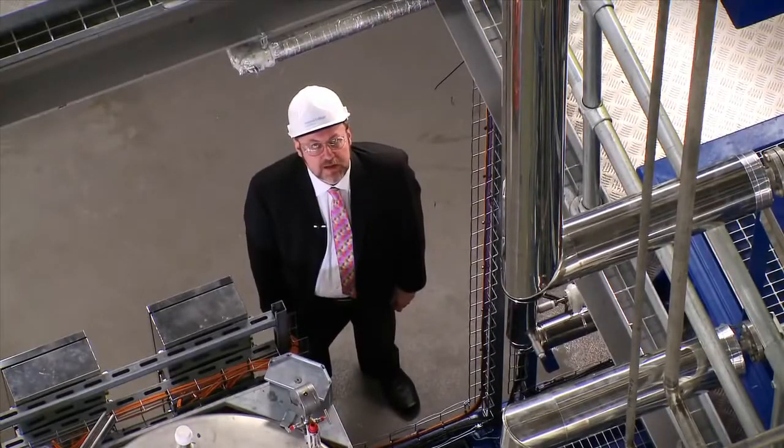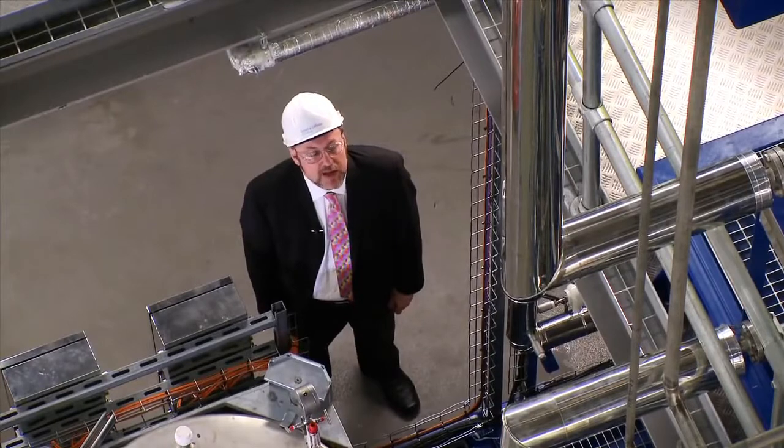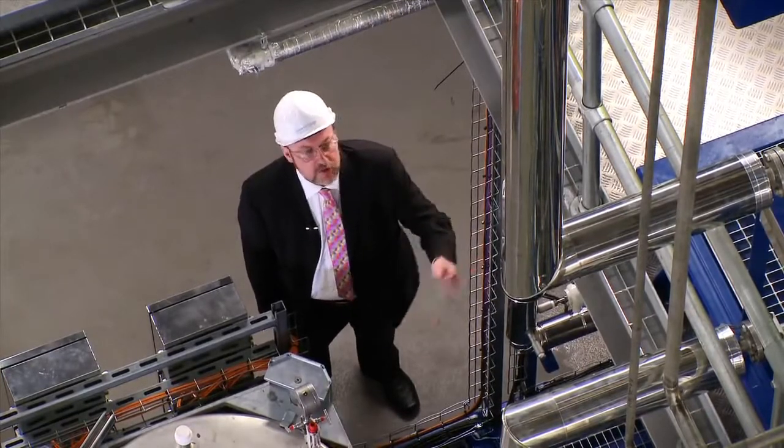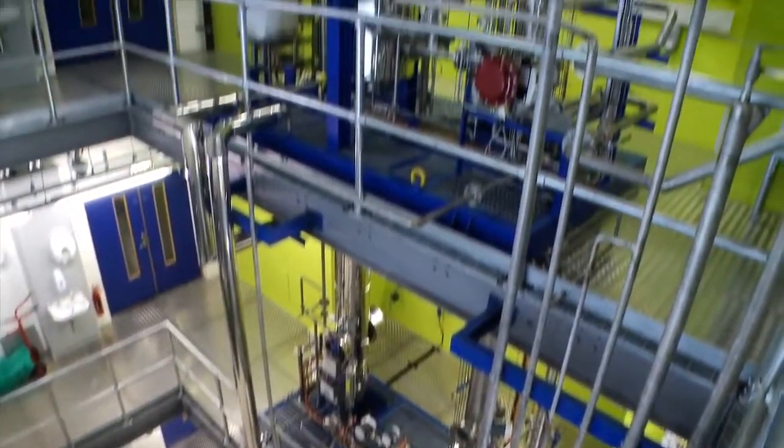A CO2 capture plant is typified by the presence of two columns, a stripper column and also an absorber column you can see here on my left. Ours are 12 metres tall, about the height of three London double-decker buses.